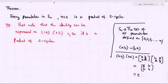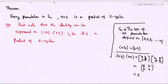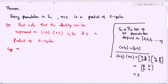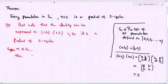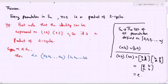From a previous theorem, every permutation of a finite set can be expressed either as a cycle or as a product of disjoint cycles. So suppose alpha is a permutation in Sn. Since alpha is a permutation on a finite set, it can be expressed as a product of disjoint cycles. So alpha can be expressed as a product of disjoint cycles: (a1, a2, ..., ak), (b1, b2, ..., bt), and so on, (c1, c2, ..., cs).